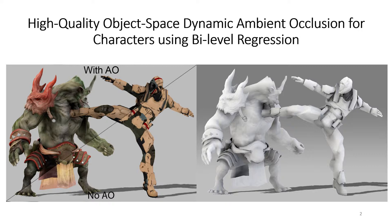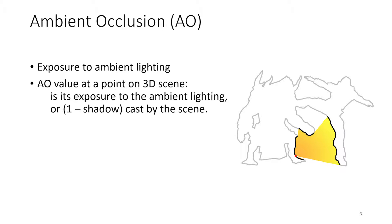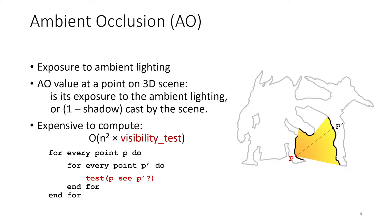This paper presents a method for computing an approximation of ambient occlusion in object space using a custom machine learning regression approach. The ambient occlusion for any given point in a 3D scene can be defined as its exposure to ambient lighting, or in other words, the opposite of shadow casts from all other points in the scene. If done correctly, this is an expensive problem to solve — essentially, for any given point in the scene, you need to know how occluded it is by all other points.